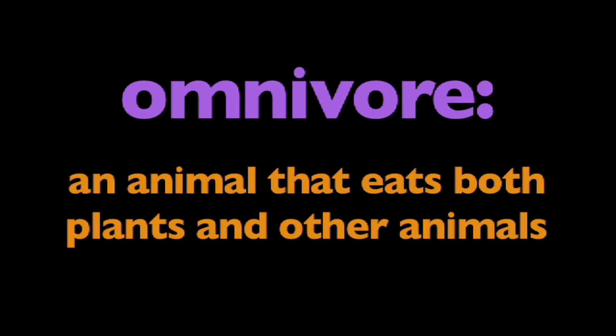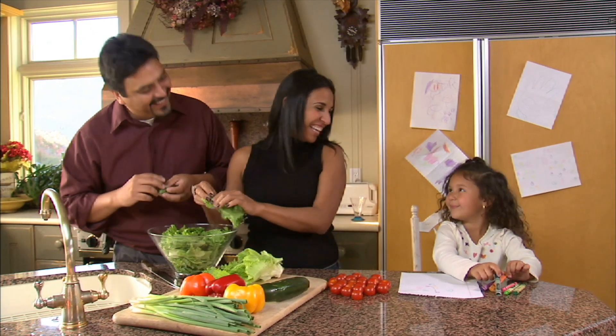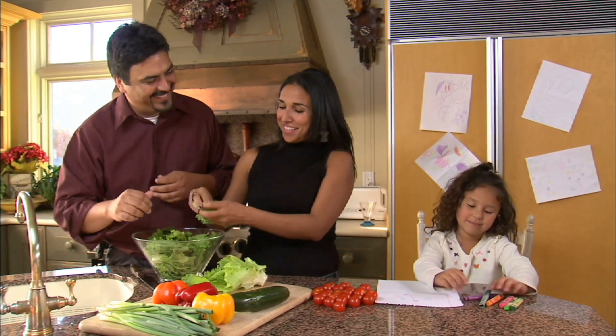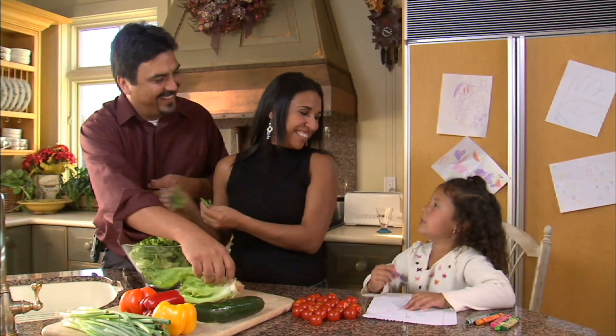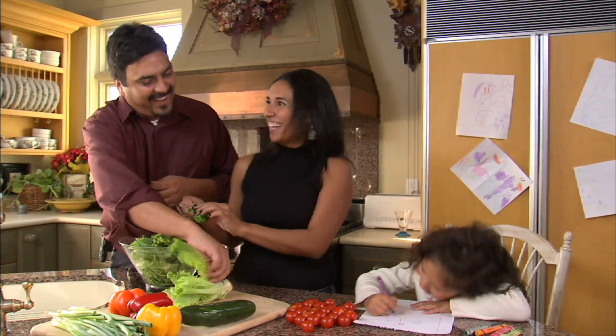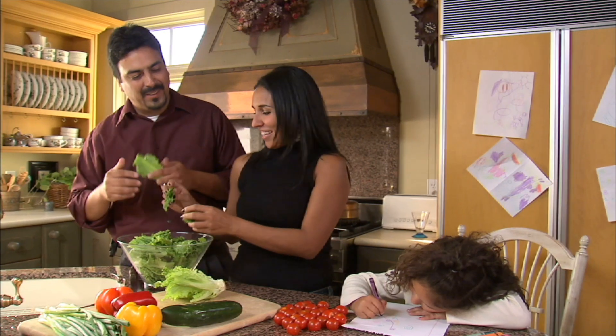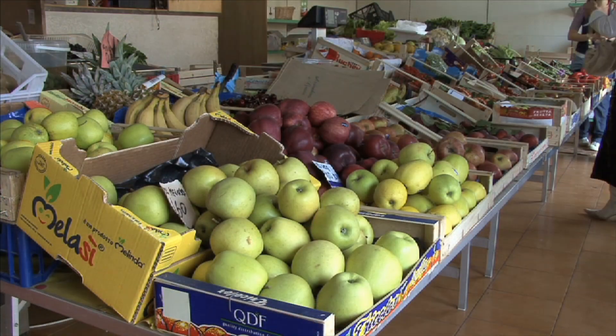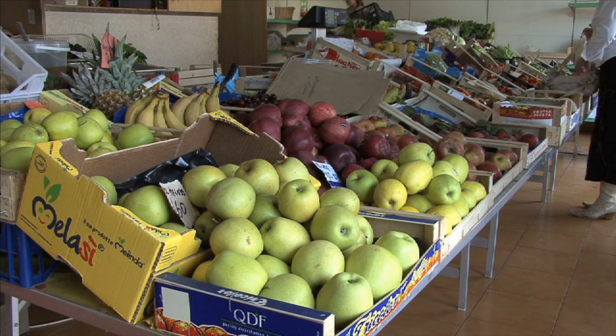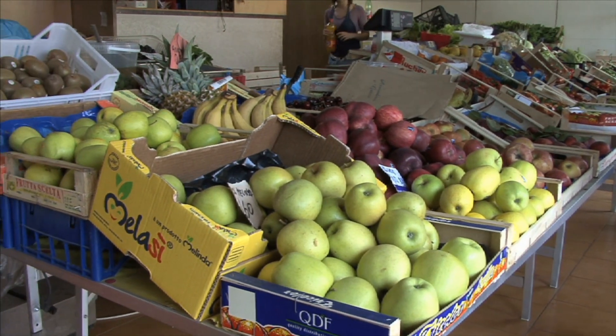In this program, we're going to learn about omnivores. What is an omnivore? An omnivore is an animal that eats both plants and other animals. Humans are just one example of an omnivore. Most people eat meat and plants, including fruits and vegetables. The supermarket is a great place for omnivores like humans to get the food they need.